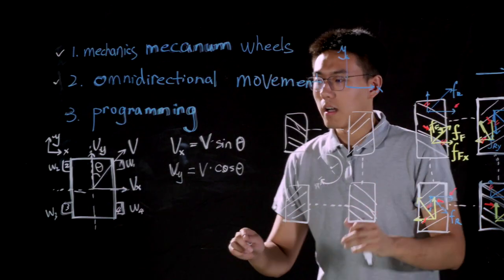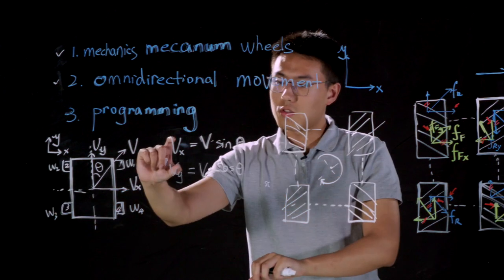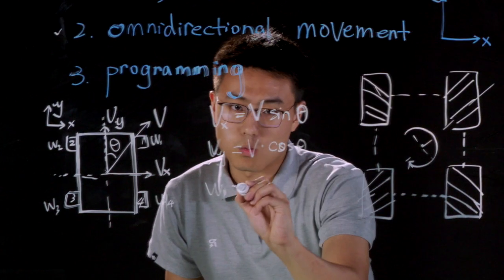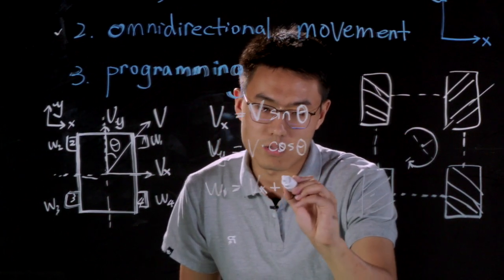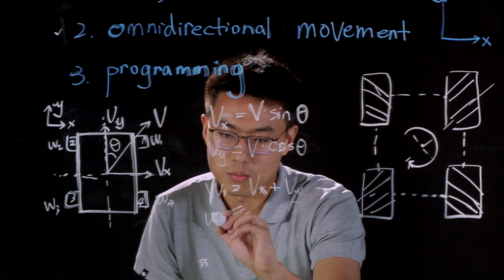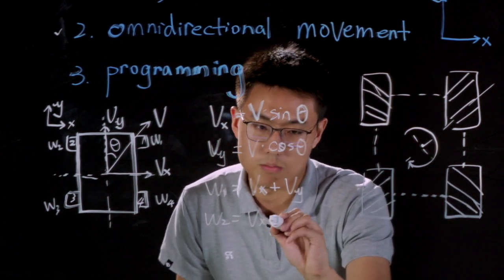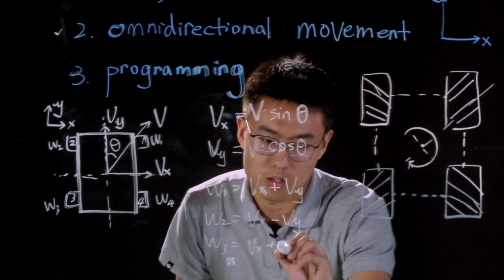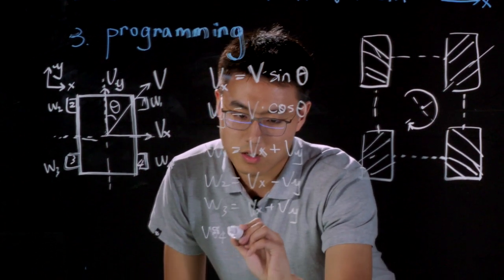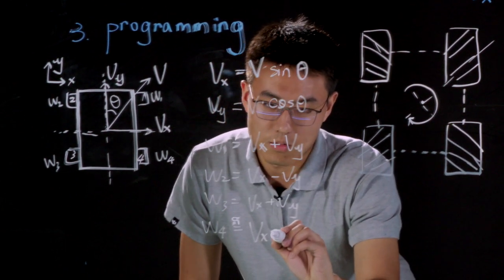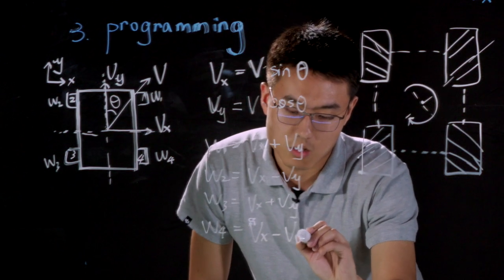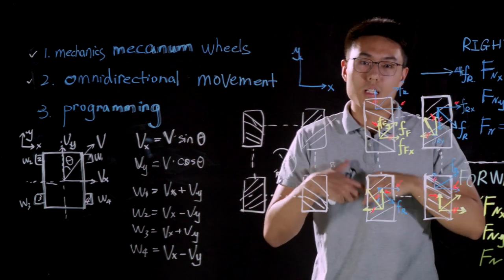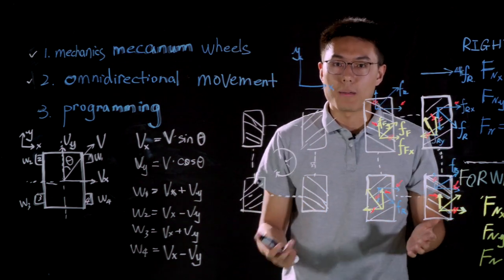Now what I'm going to do is define these four unknowns with these two known values. And we can write down the formula. Omega 1 equals to Vx plus Vy. Omega 2 equals to Vx minus Vy. Omega 3 equals to Vx plus Vy. And omega 4 equals to Vx minus Vy. If you want to know how to derive this formulae, you can find out the derivation in our advanced video about the Mecanum wheels.